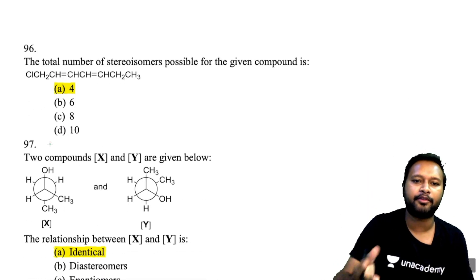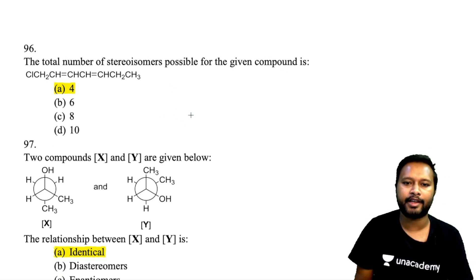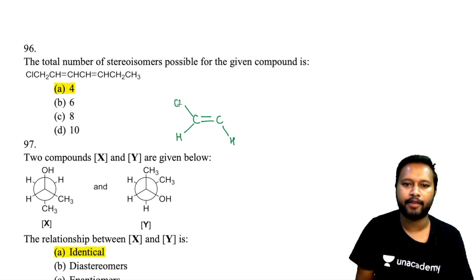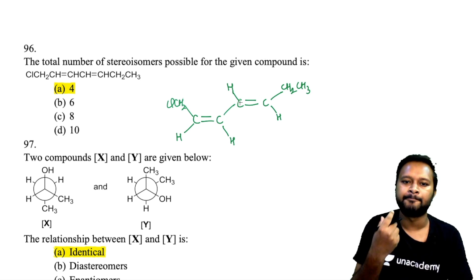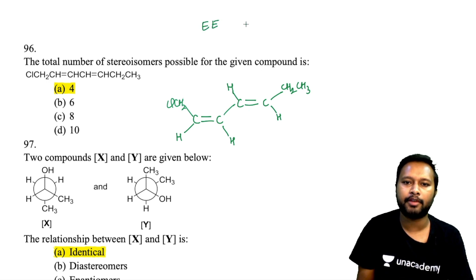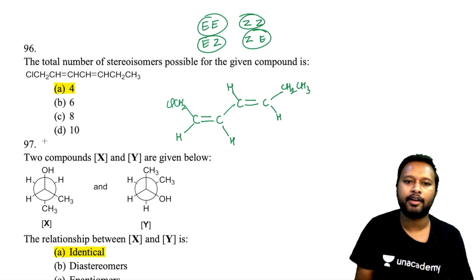Question 96 asks for total stereo isomers of a compound with two C=C double bonds (CH=CH–CH=CH₂Cl type). Each alkene can independently be E or Z, giving combinations: EE, ZZ, EZ, ZE — four possible stereo isomers. Option A is correct.